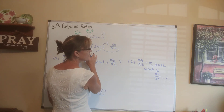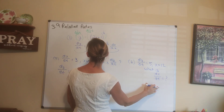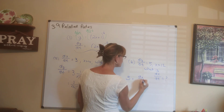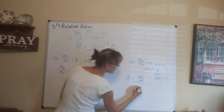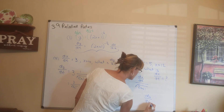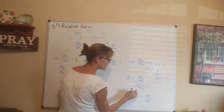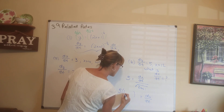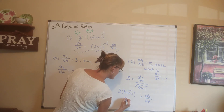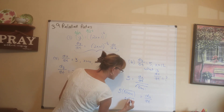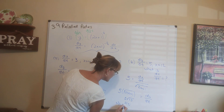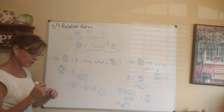For part b, we use the same formula to find dx/dt. With dy/dt equal to 5: 5 equals dx/dt over the square root of 2x plus 1. Multiplying both sides by the square root of 2x plus 1, with x equal to 12: dx/dt equals 5 times the square root of 24 plus 1, which is 5 times the square root of 25, giving 5 times 5 equals 25.